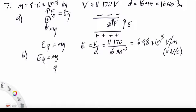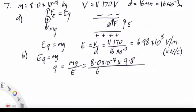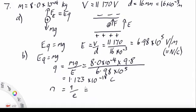Now we have that E Q equals M G, so Q, we just divide both sides by E, and that will be 8 by 10 to the minus 14 times 9.8 divided by our 6.98 by 10 to the 5. That gives us a charge of 1.123 by 10 to the minus 18 coulombs. And if that is the total charge on the drop, then the number of electrons is this charge over the charge on a single electron, and it is about 7.01. So it was clearly 7 electrons that had been removed.